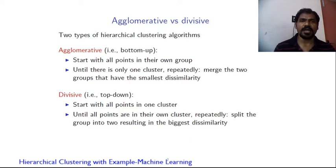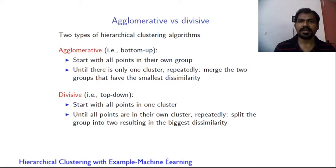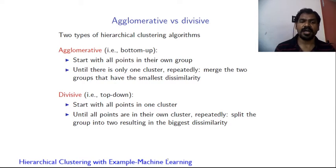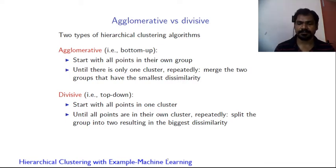There are two types of clustering algorithms: agglomerative and divisive. Agglomerative is a bottom-up approach — it starts with all points in their own group, say five clusters initially, and merges until there is only one cluster. Divisive is the vice versa — a top-down approach that starts from all points in one cluster and repeatedly splits until all points are in their own clusters.